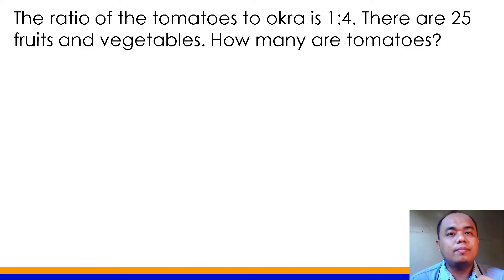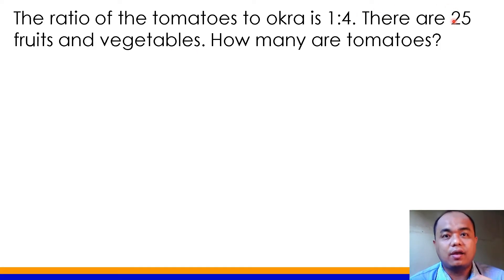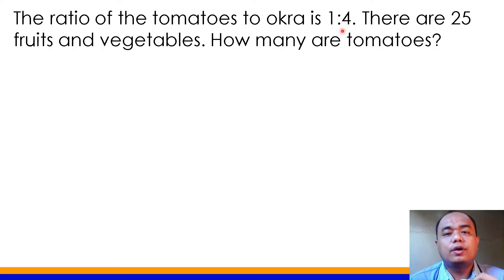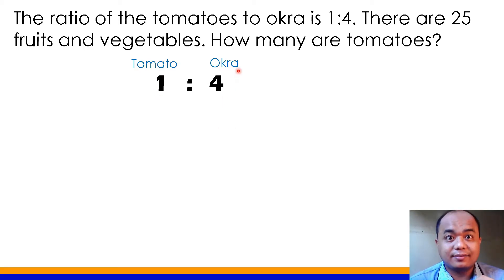This problem refers to partitive proportion. Binigyan ka dito ng whole — yung 25 na whole number ay ang kabuuang bilang ng fruits and vegetables. Gagamitin natin yung ratio na 1 is to 4 para mahati yung 25. Ang 1 stands for number of tomatoes kasi tomato yung una na naibigay. Pangalawa ang 4, which is okra. So in every 1 tomato, merong 4 na okra.